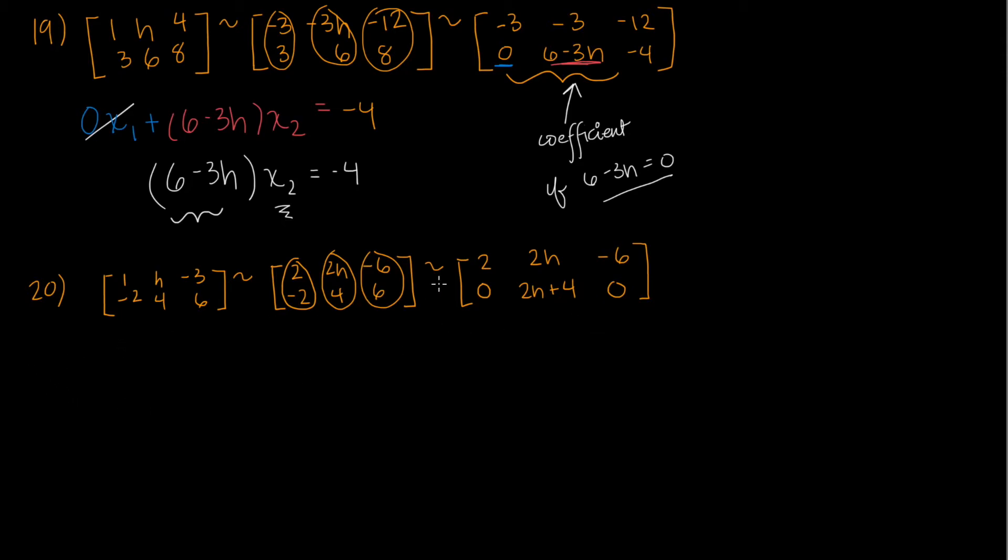Now, what we're going to do again is look at the row with h. You can pick any one. I prefer to pick the bottom row because it's simpler, has more zeros. If we have two h plus four as our coefficient of x2,